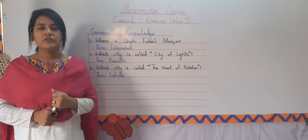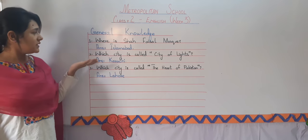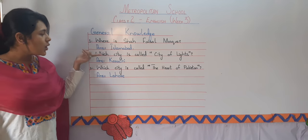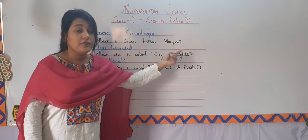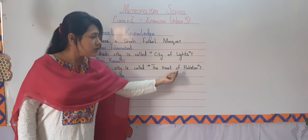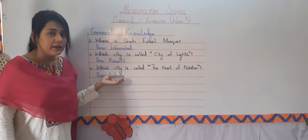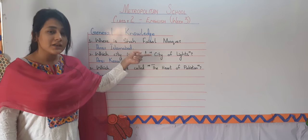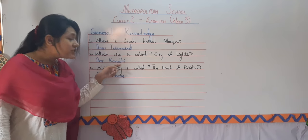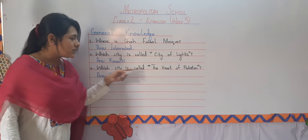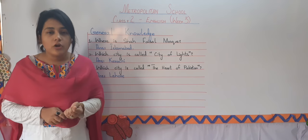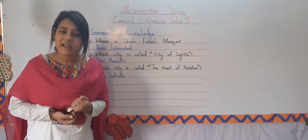At the end of the lesson, we are going to do general knowledge. Question number 1: Where is Shah Faisal Mosque? Shah Faisal Mosque is in Islamabad. Question number 2: Which city is called the City of Lights? The answer is Karachi. The last question: Which city is called the Heart of Pakistan? And the answer is Lahore. Let's repeat one more time: Shah Faisal Mosque is located in Islamabad. Karachi is called the City of Lights. Lahore is called the Heart of Pakistan. That's all for today's lesson. Hope to see you in the next class. Allah Hafiz. God bless you. Thank you.